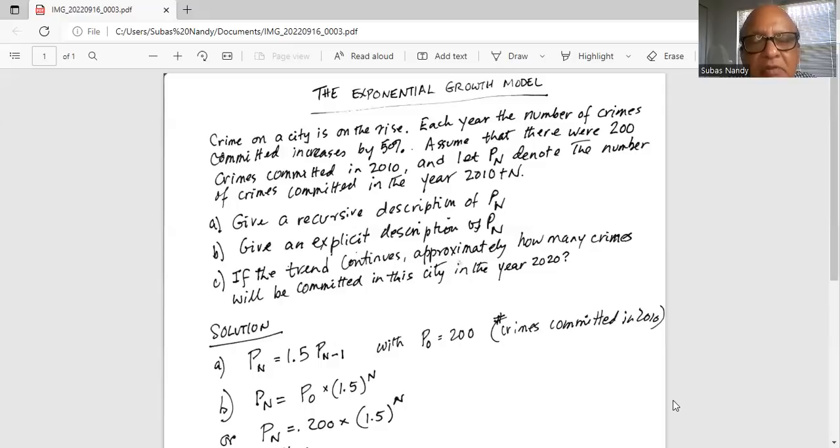So whatever it was in Pn minus 1 year, in the nth year, if it is Pn minus 1, then in nth year it will be Pn equal to 1.5, 50% more than Pn minus 1. So this is the recursive description of Pn.